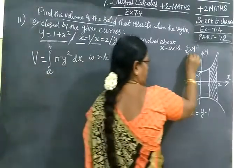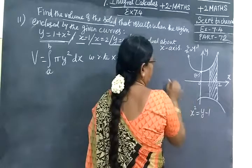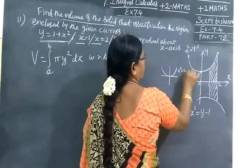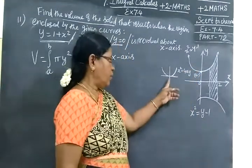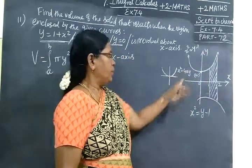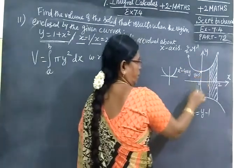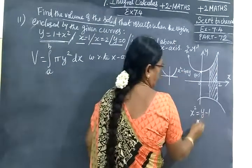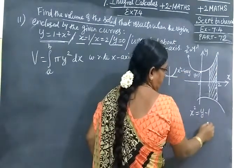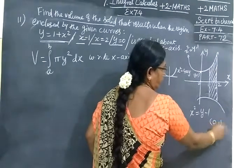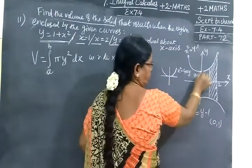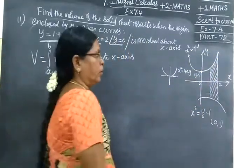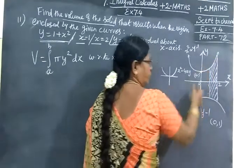Let us draw this parabola. This parabola y equals 1 plus x² is not passing through the origin. When x equals 0, y value equals 1, so we have the point (0,1). Then draw the parabola.